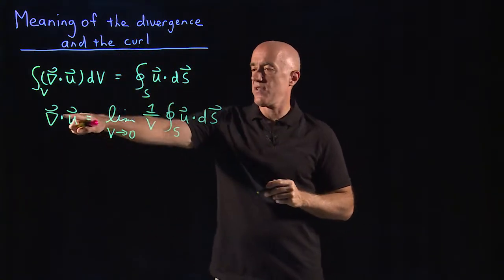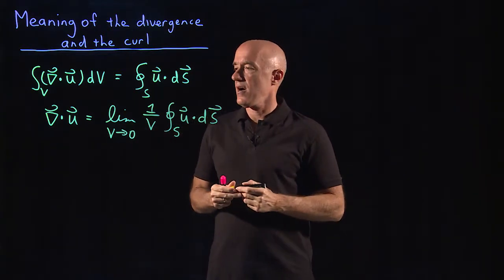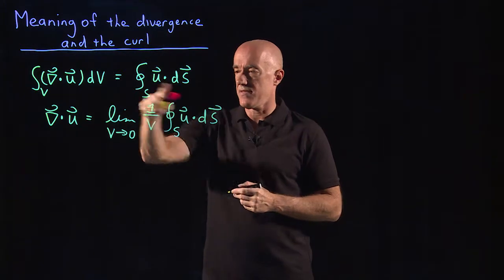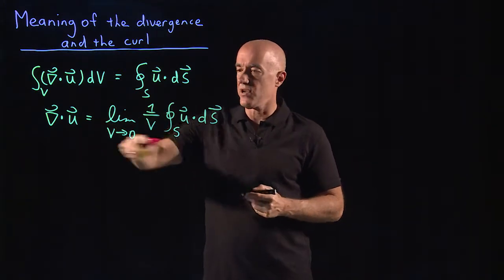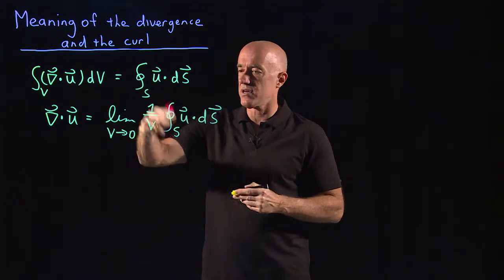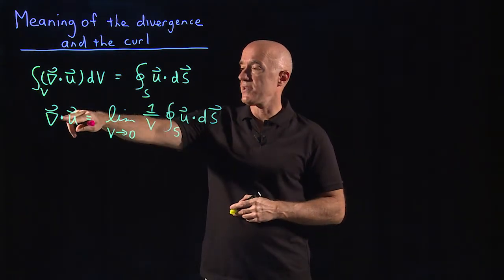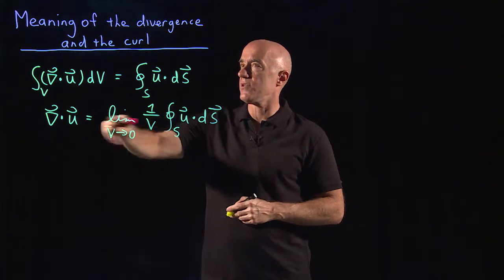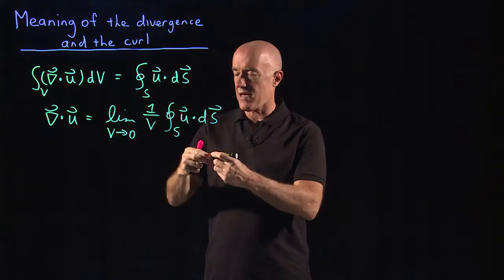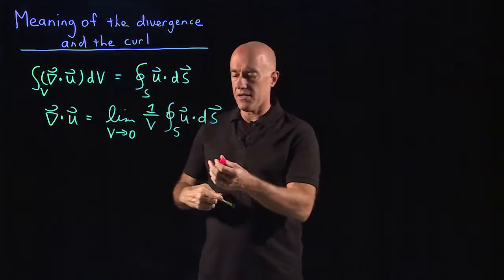From the divergence theorem, we can have a definition of the divergence of a vector field in terms of this limit — and it's coordinate free. It doesn't specify whether we're working in Cartesian coordinates or spherical coordinates. So from this definition of del·u, let's see if we can construct some physical meaning of del·u.